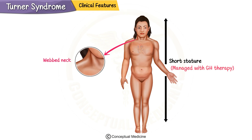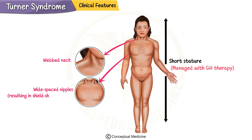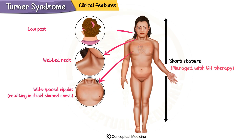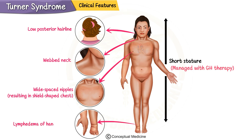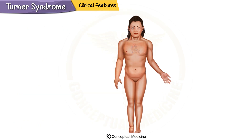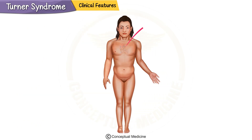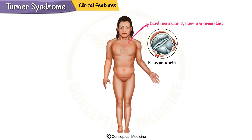Patients often have other characteristic physical features such as a webbed neck, wide-spaced nipples resulting in a shield-shaped chest, a low posterior hairline, and lymphedema of the hands and feet, which is particularly noticeable during infancy.